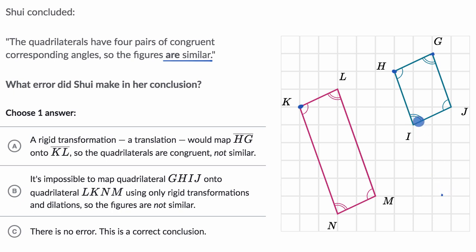So, and then if you tried to dilate it down so that the length of KN is the same as the length of HI, well then the lengths of KL and GH would be different. So it doesn't seem like you can do this. So it is strange that Shui concluded that they are similar.